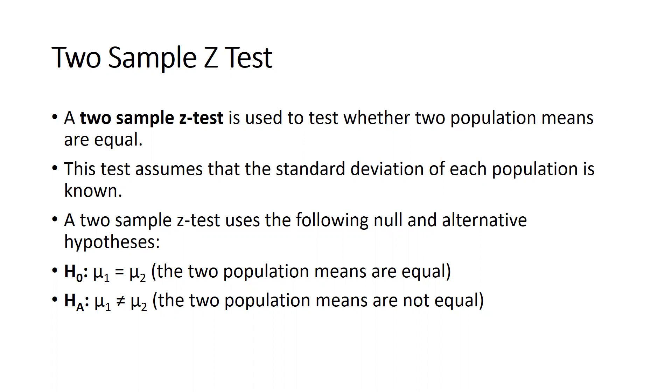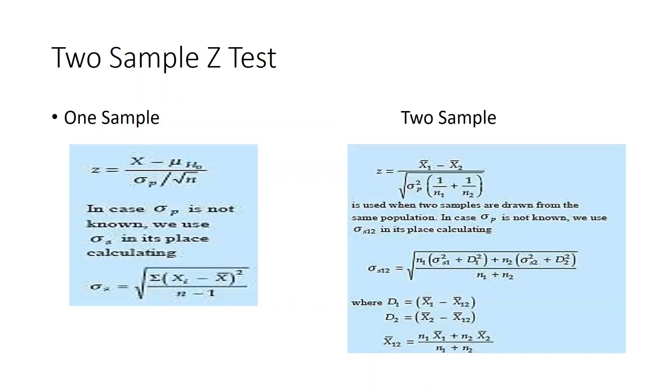Let's begin with an example. First of all, let me explain you what is one sample and what is two sample. The simple formula of one sample z-test you can see here: x minus μ₀ (null hypothesis μ₀). In case σₚ is not known, we use σₛ. σₚ stands for standard deviation of population and σₛ stands for standard deviation of sample. In its place calculating, this is the formula.